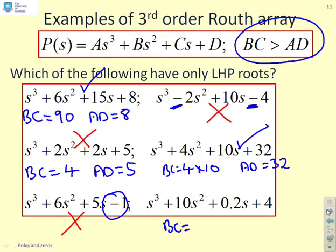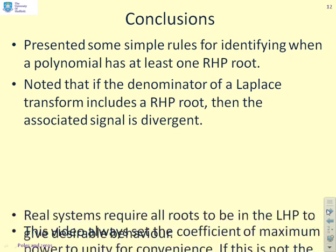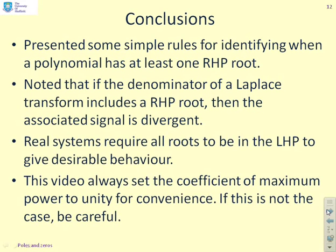So conclusions. We've presented some simple rules for identifying when a polynomial has at least one right half-plane root. We've noted that if the denominator of a Laplace transform includes a right half-plane root, then the associated signal is divergent, and that's why this observation is so important. Therefore, real systems require all the roots of the denominator to be in the left half-plane if we're going to get desirable behavior.